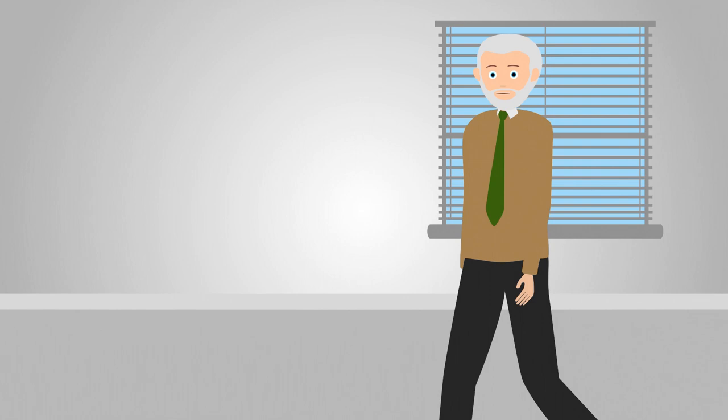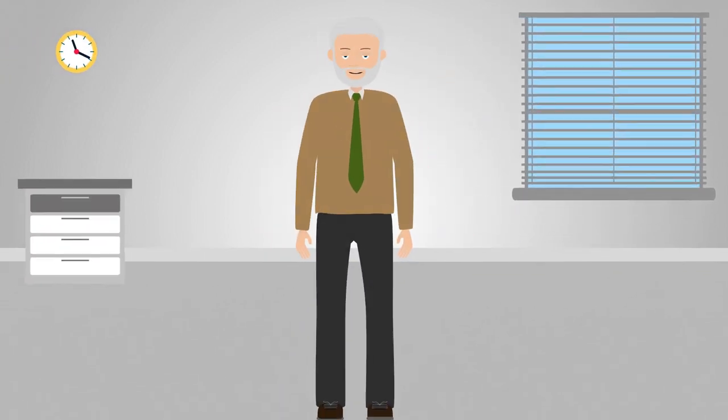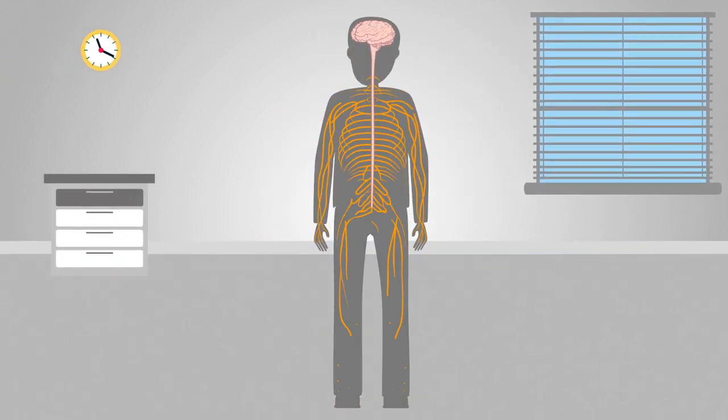Every process that is performed in our body is controlled by electricity. The nervous system acts as our body's natural electrical wiring network and is composed of billions of specialized cells known as neurons.